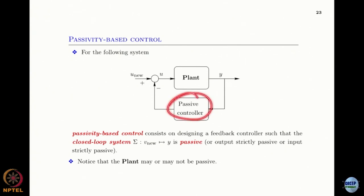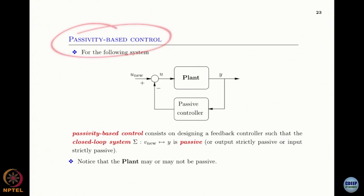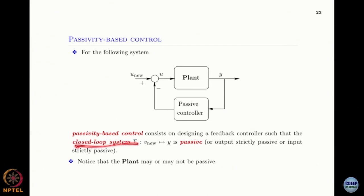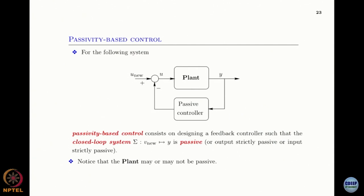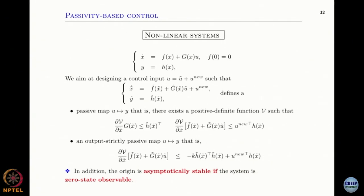If the plant is not passive initially, you apply a controller — if possible — to render it passive. What you want at the end of the day is to enforce passivity in your system. Passivity-based control is about designing a controller so that the closed-loop system is passive. If you want asymptotic stability, you want this passivity to be strict.